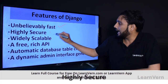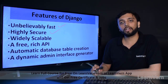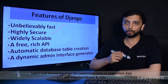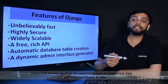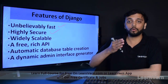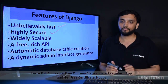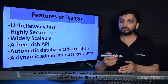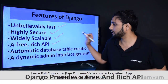The second distinctive feature of Django is that it is highly secure. Django takes security very seriously and helps developers avoid common mistakes. In addition, Django provides a widely scalable feature, and because of this feature there are so many technical giants that use Django for their backend support.